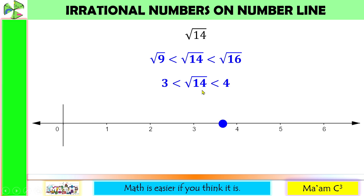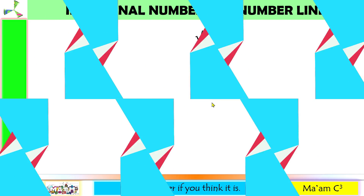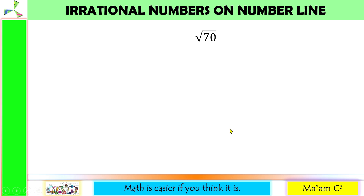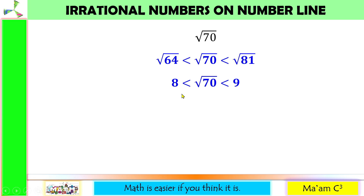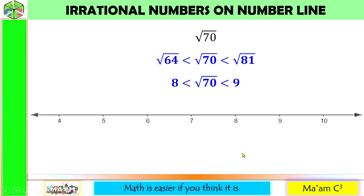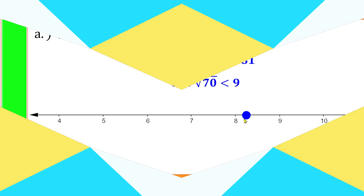Let us plot a point closer to 4 than to 3 — this is square root of 14. Another example is square root of 70, which is less than the square root of 81 but greater than the square root of 64, or square root of 70 is less than 9 but greater than 8. Since 70 is closer to 64 than to 81, then square root of 70 is closer to 8 than to 9. Here is 8 and here is 9. Let us plot a point closer to 8 than to 9 — this is square root of 70.